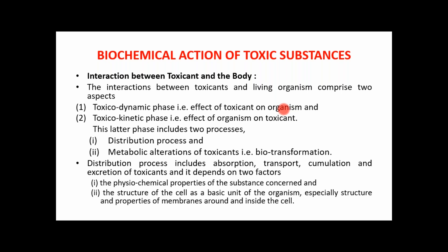The toxicokinetic phase includes two aspects: distribution processes and metabolic alteration of toxicants, also called biotransformation. The distribution process includes absorption, transport, accumulation, and excretion of toxicants. This depends on two factors: the physicochemical properties of the substance and the structure of the cell as the basic unit of the organism, especially the structure and properties of the membranes around and inside the cell.